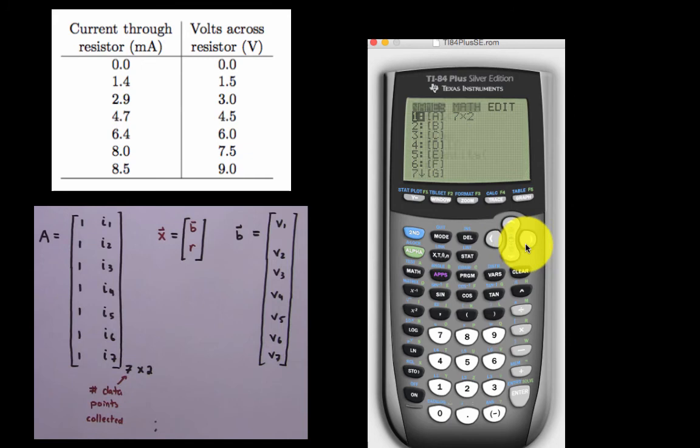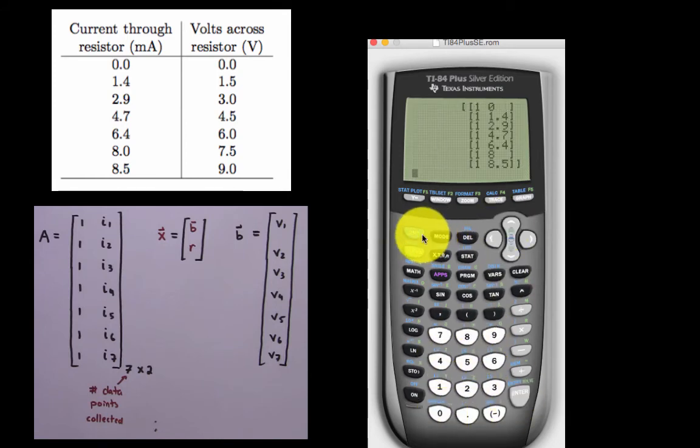Next, we store the input values for the vector B, which are the individual corresponding voltages across the resistor that we can get looking at our table of values. We input each of these voltages and check that the vector that results is the same vector that we want to analyze.